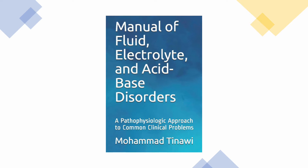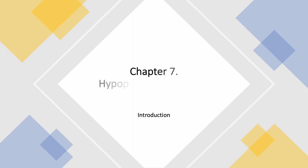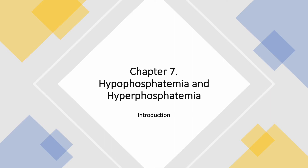This is the book. It's available on Amazon. Currently, there is an e-book, a paperback, and now a hardcover also available. You can buy it by following the link below. We are starting today with a new chapter — Chapter 7 — and it is on phosphate metabolism.